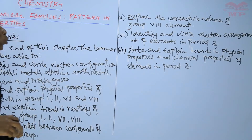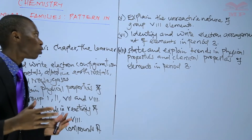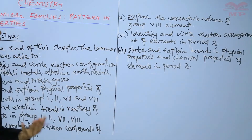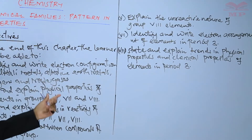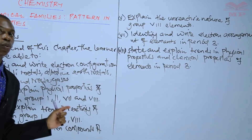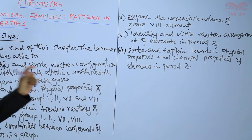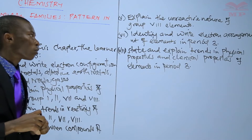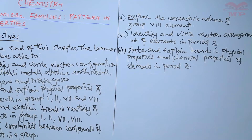Next, you should be able to identify and write electron arrangements of elements in period three. I will tell you the elements in period three and we will discuss and write electron arrangement — we covered how to write electron arrangement in a previous topic, but we will remind ourselves. Lastly, you should be able to state and explain trends in physical properties and chemical properties of elements in period three. Those are the objectives you need to have as we go through this topic.